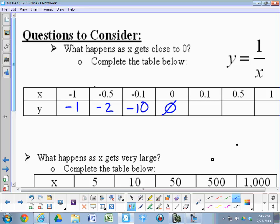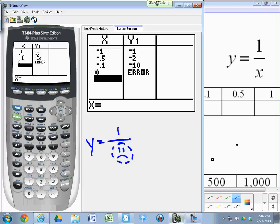So what would happen if you put in negative 0.01, or negative 0.001, or negative 0.00001? The y's are going to get bigger but in a negative fashion. Go ahead, try putting in negative 0.00001.